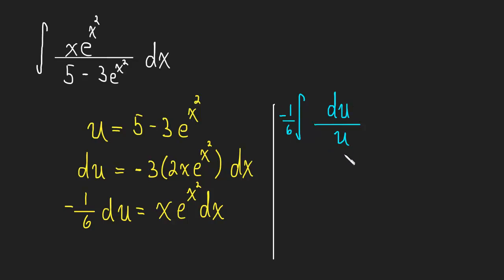This is now a very simple logarithm integral. This is going to be negative one-sixth times the natural log of the absolute value of u plus c. Now all we have to do is plug in for u. The natural log of what is u?